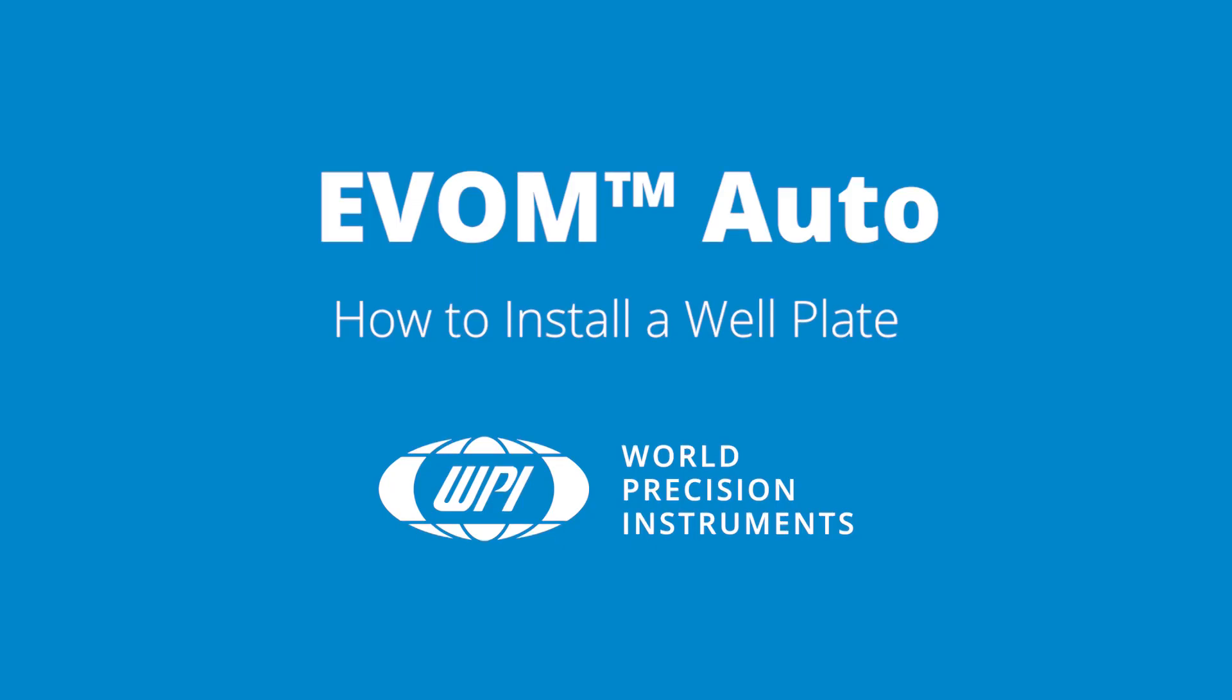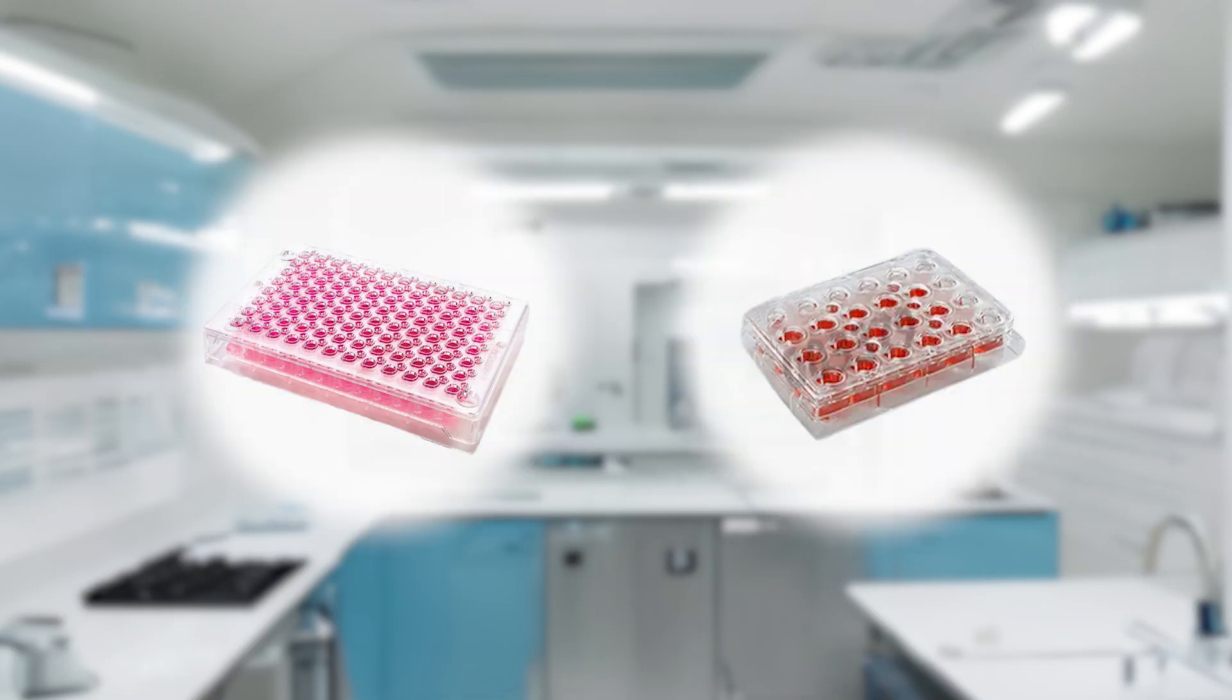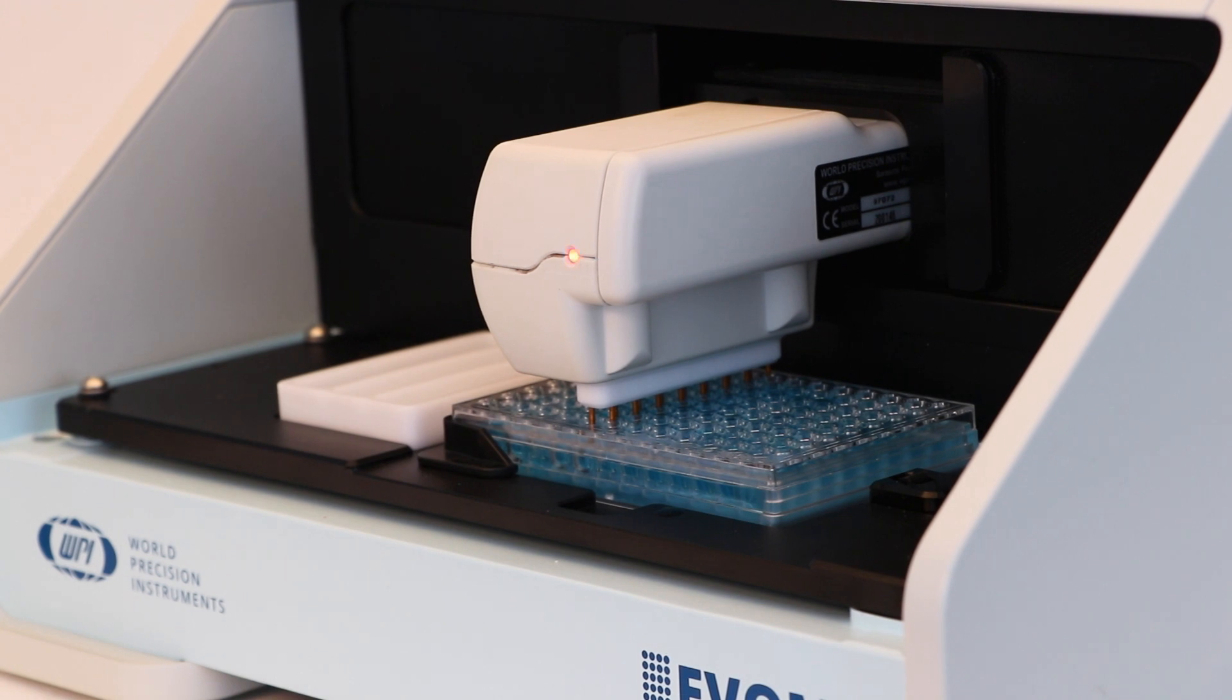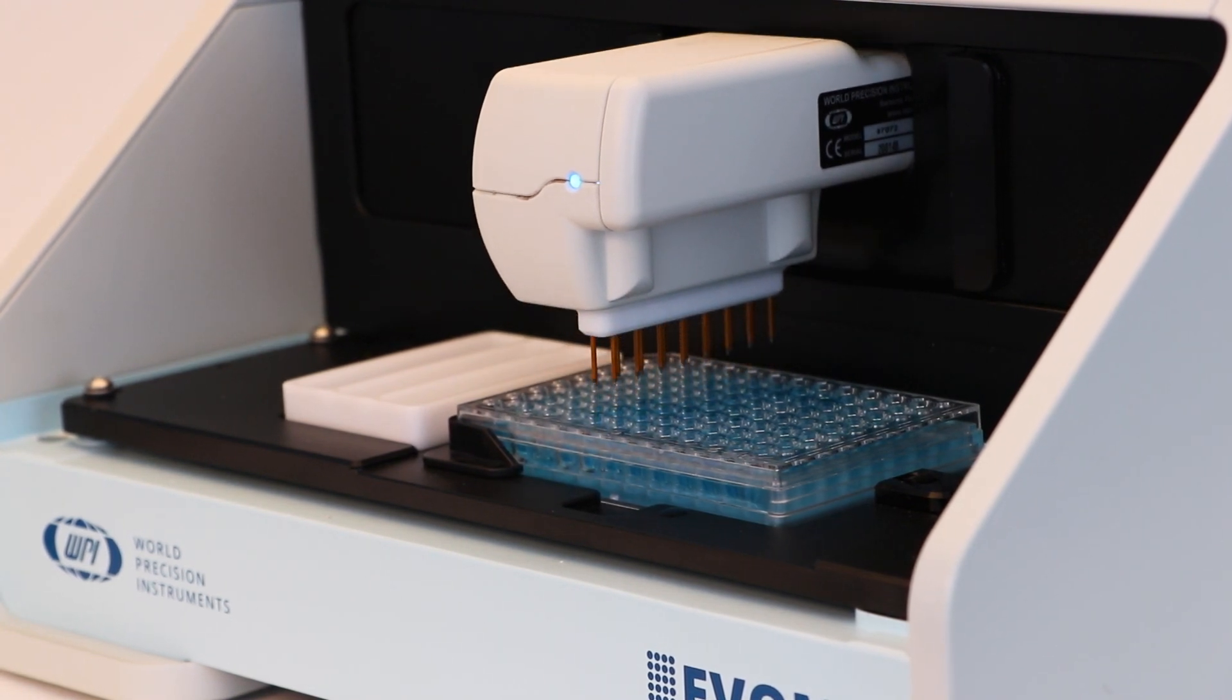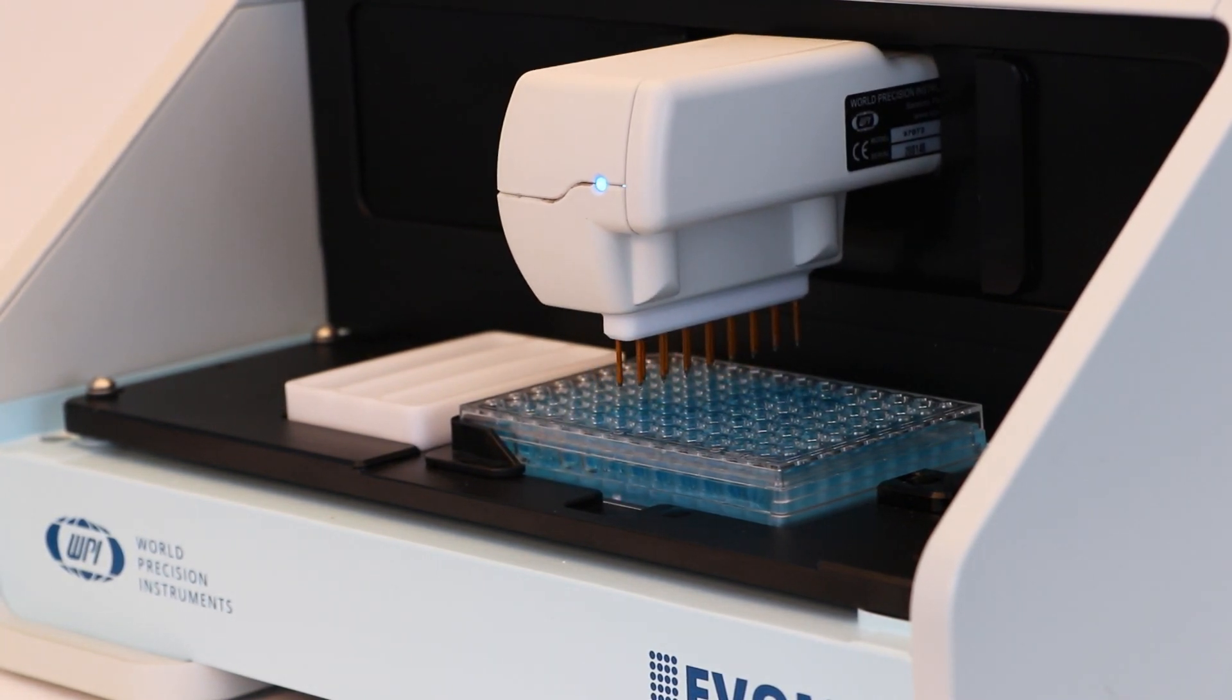EVAM Auto version 3 can switch between different 24 and 96 high throughput screening well plates by using matching electrode arrays and plate positioners. Here we demonstrate how to install a well plate.